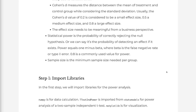Statistical power is the probability of correctly rejecting the null hypothesis, or the probability of detecting an effect if it exists. Power equals 1 minus beta, where beta is the false negative rate or type 2 error. 0.8 is a commonly used value for power. Sample size is the minimum sample size needed per group.